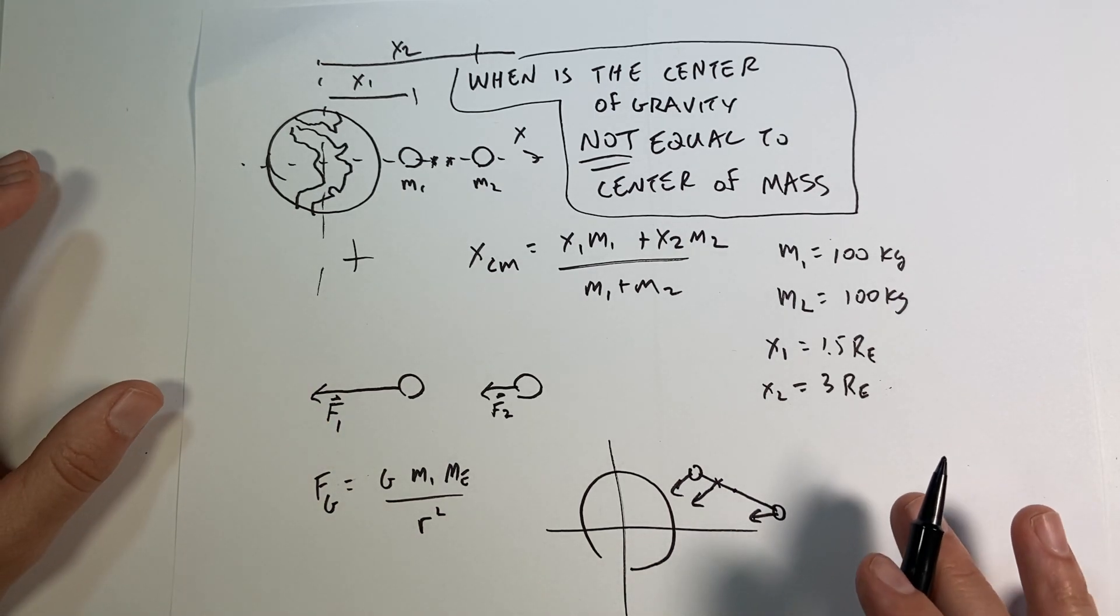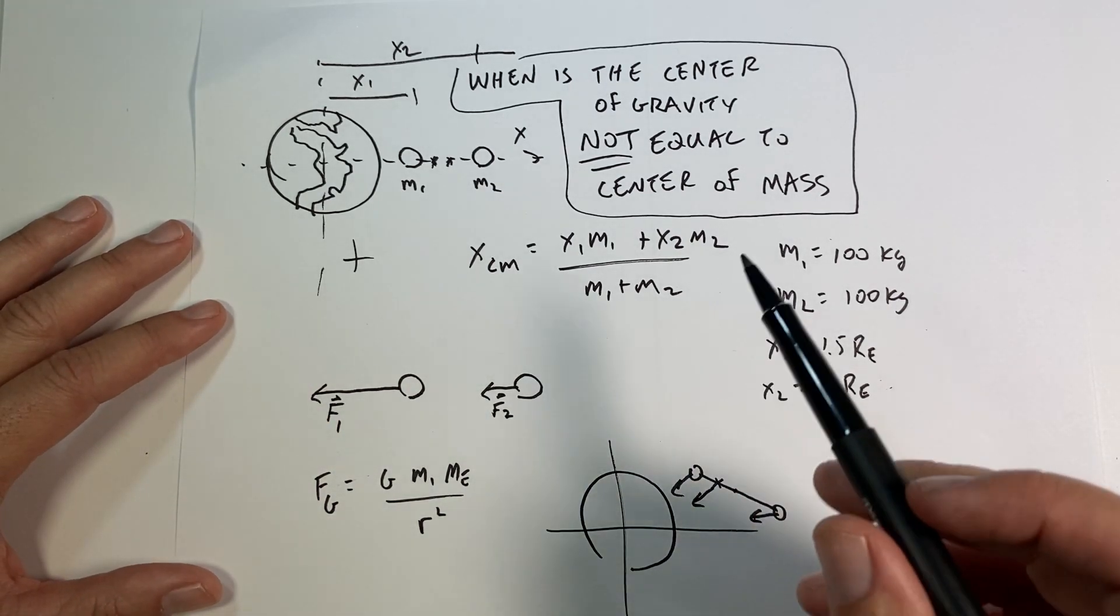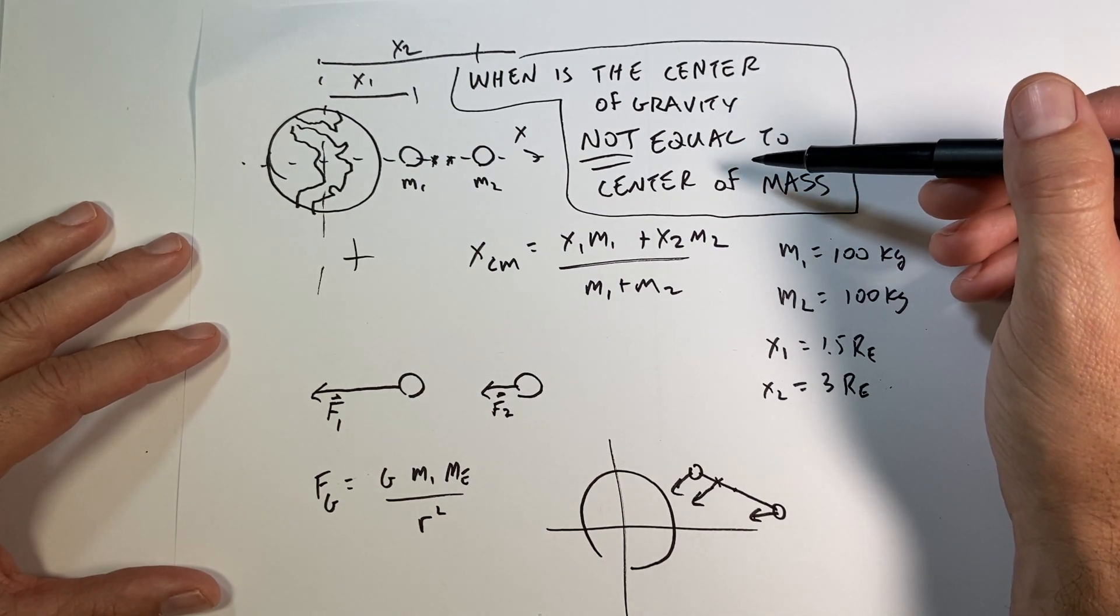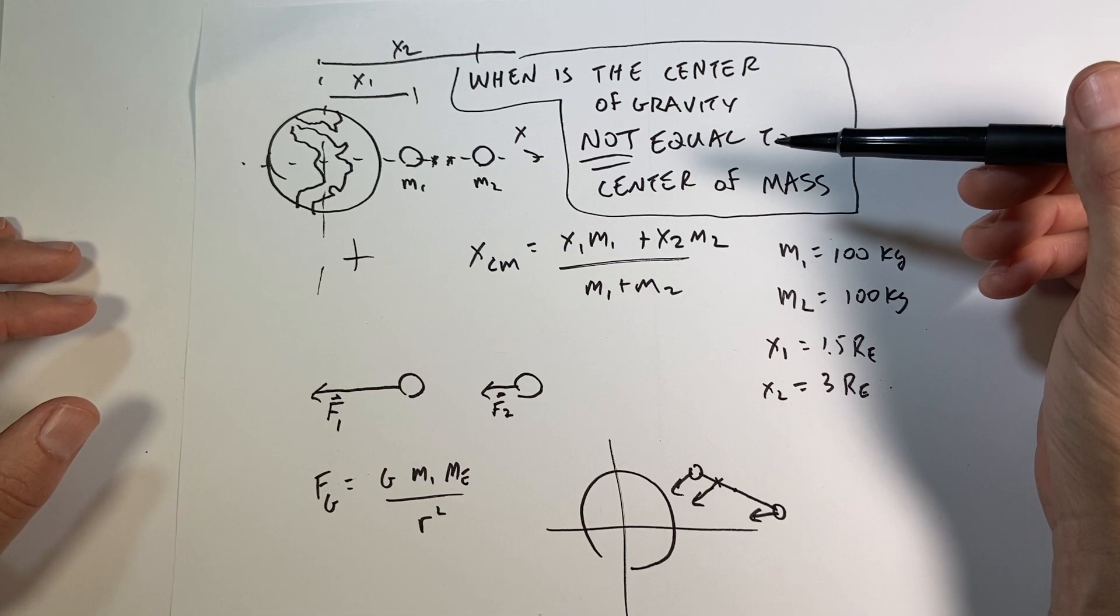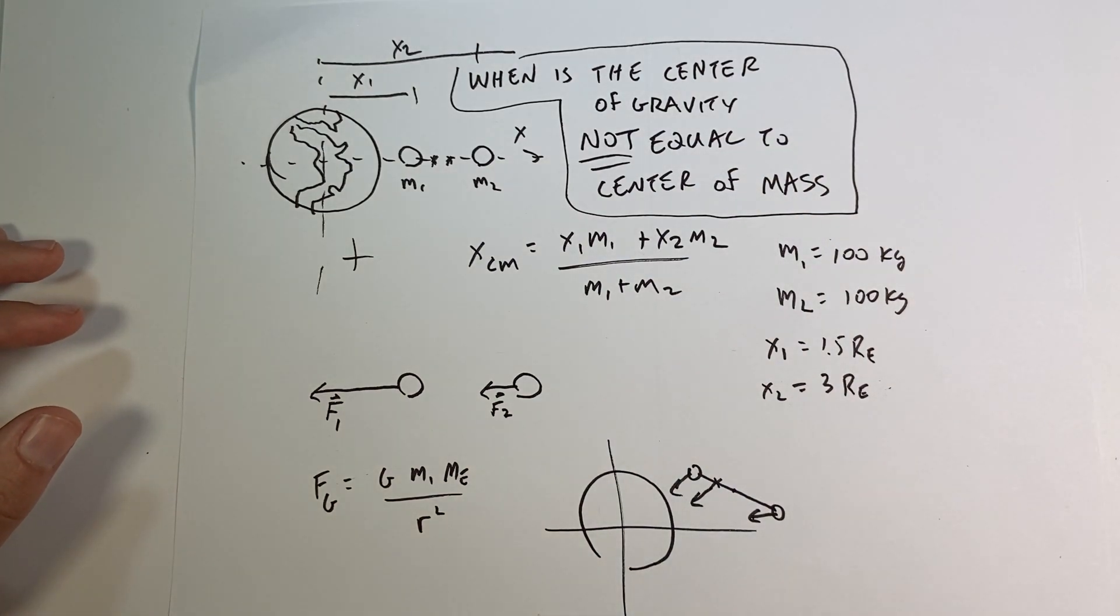And I'm not going to calculate that because it gets a little complicated. I just want to show you one case where the center of gravity is not equal to the center of mass, so you don't think that they're always the same. We'll do some problems with this center of mass and torque on another video. I'll see you guys later.